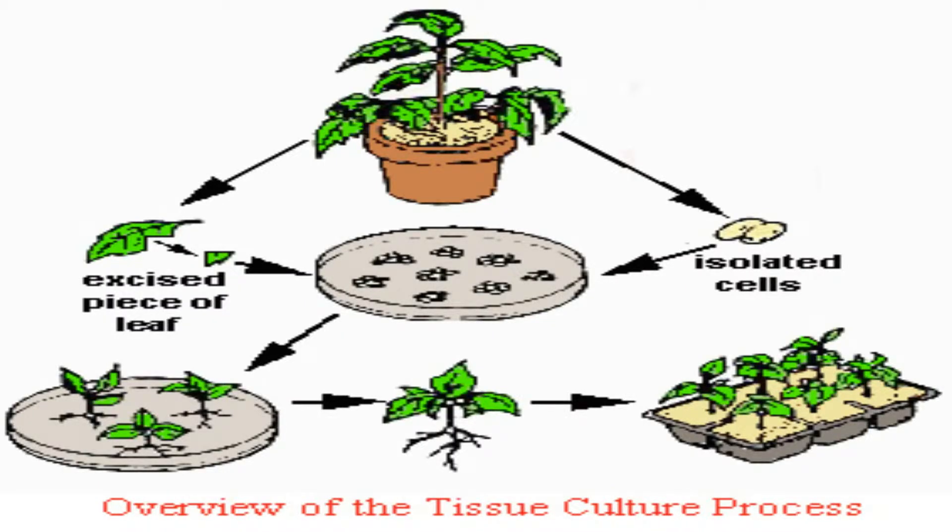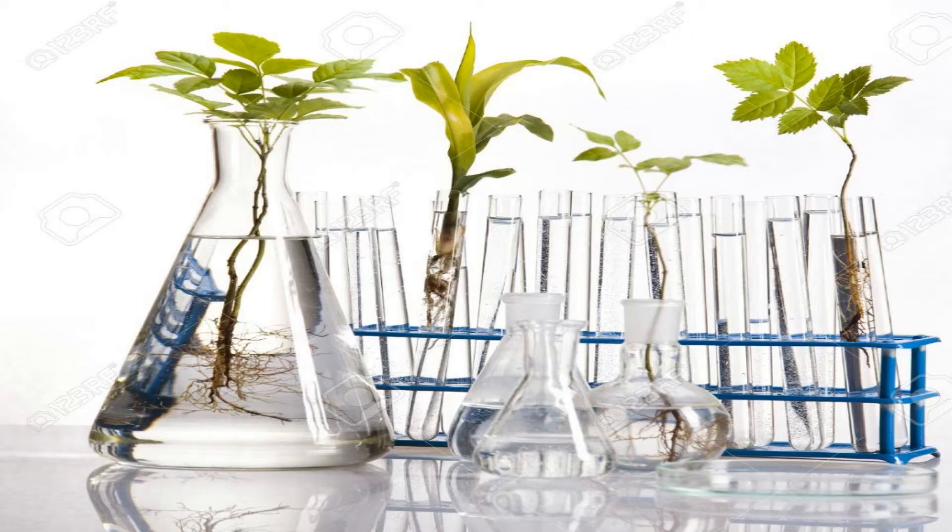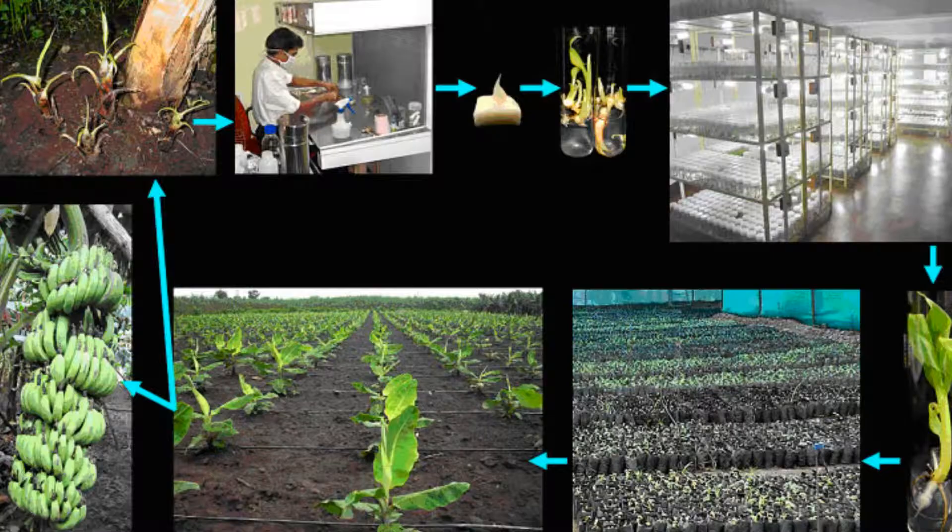Tissue culture technology is well accredited for the production and conservation of species that are about to become extinct. Plants which do not produce endosperm can be developed directly by culturing their embryo. The rapid multiplication of plants which don't reproduce through sexual reproduction, or whose rate of natural reproduction is low, can be done by culturing their embryo.